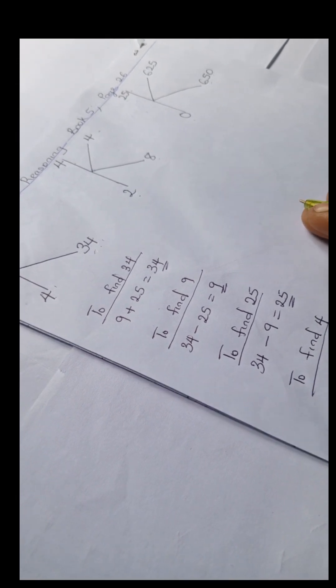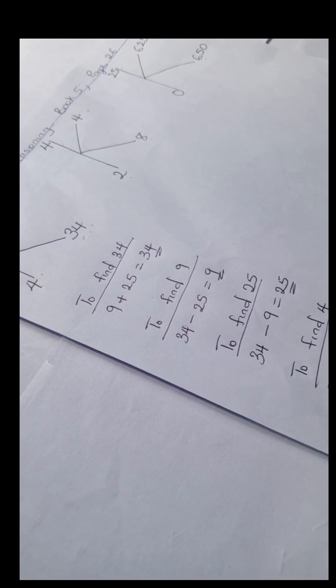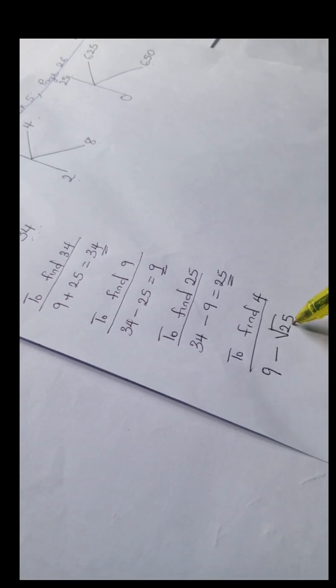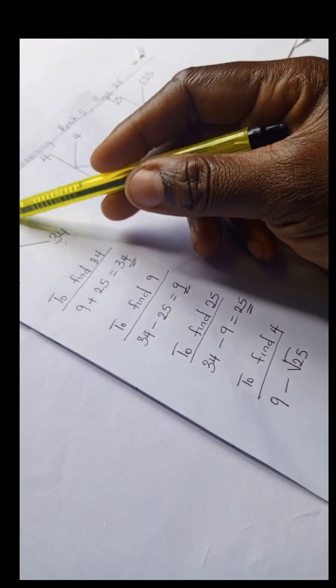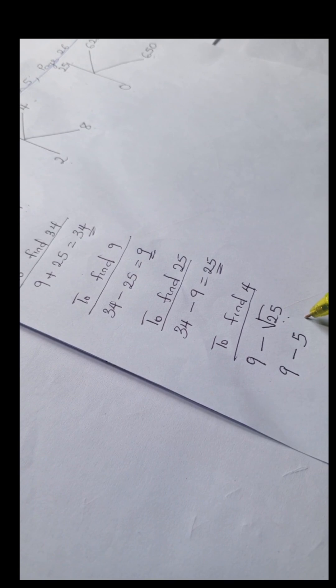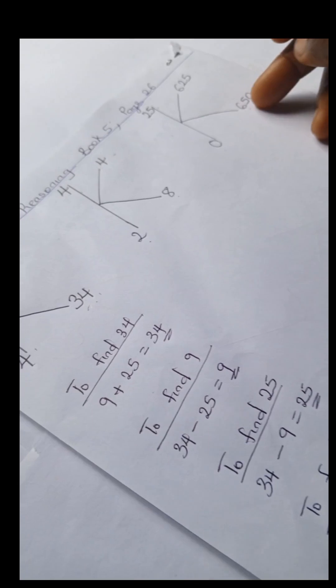We're going to have 9 minus square root of 25. So we have square root of this 25 here. Square root of 25 is 5, so 9 minus 5 gives us 4. Okay, so we're going to work on this. We can try this last example.